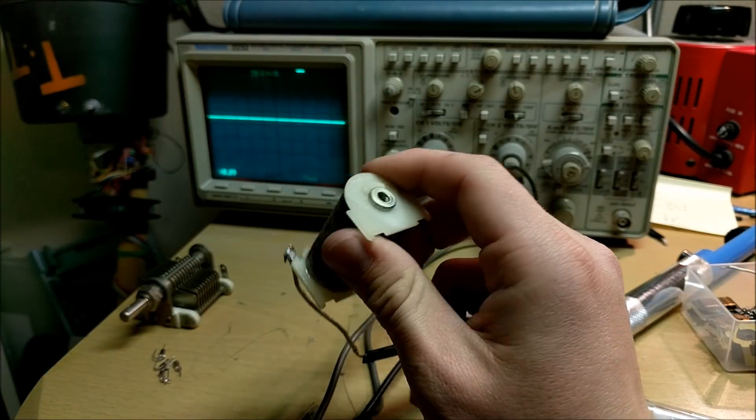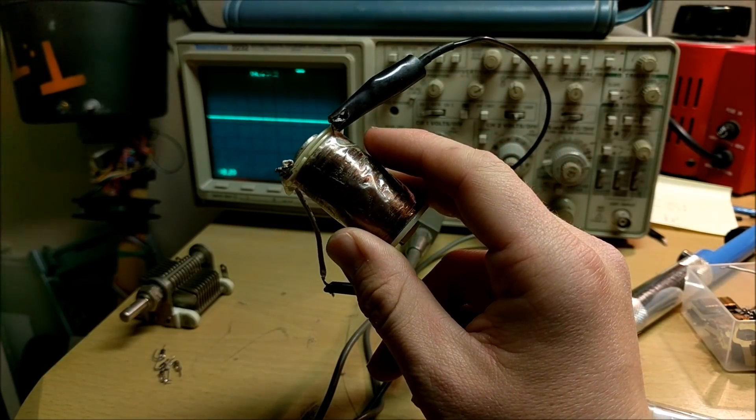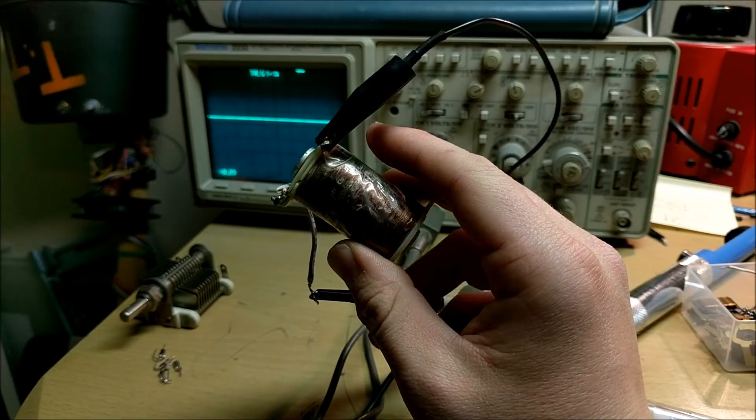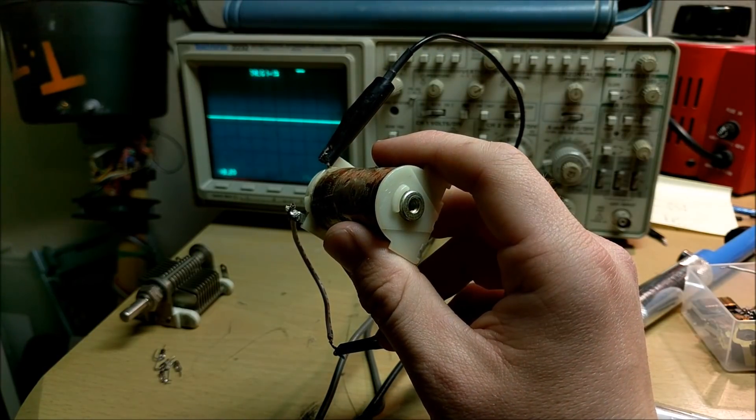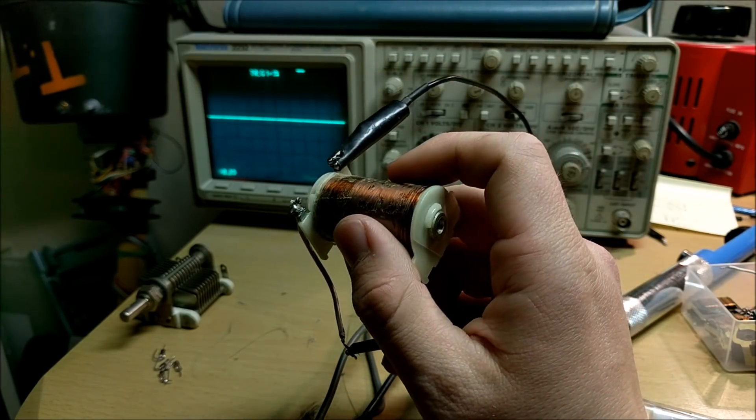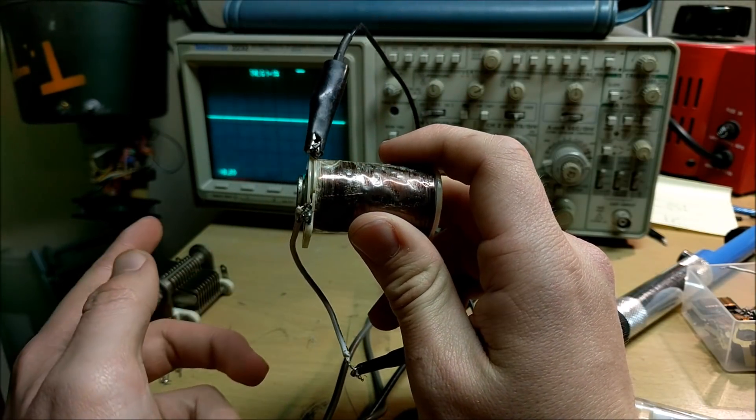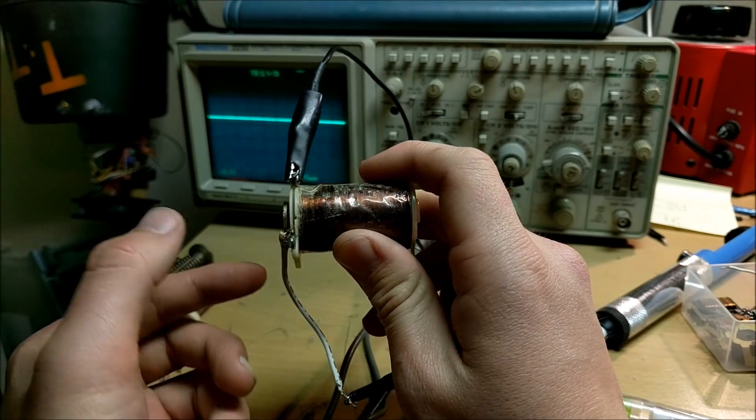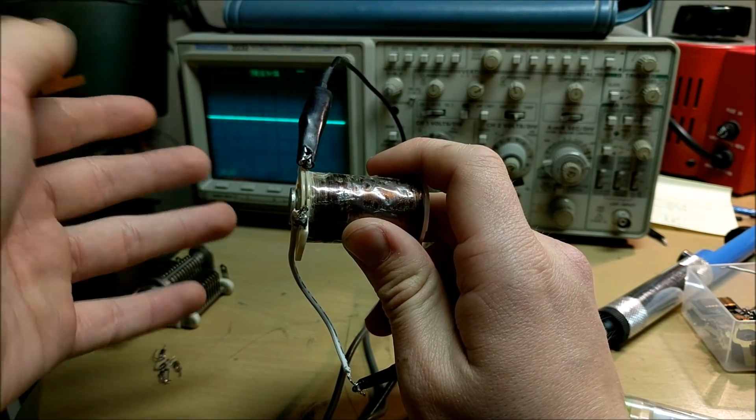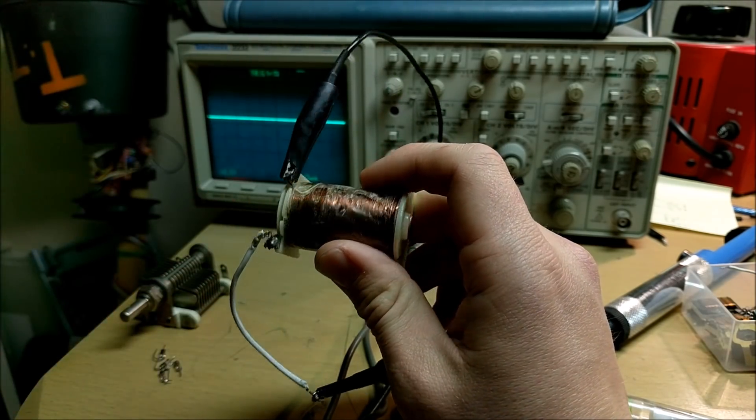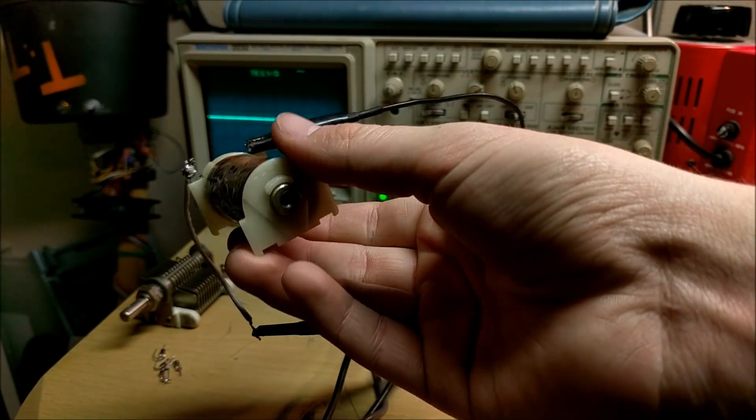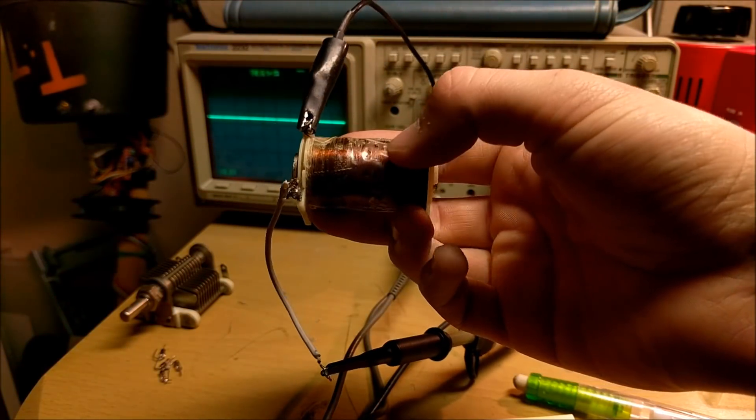This setup doesn't only measure high voltage circuits. It can measure any circuit where you want complete isolation with your oscilloscope—like when you don't want the oscilloscope interfering with a circuit, or don't want your oscilloscope ground connected to the circuit ground.